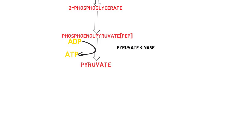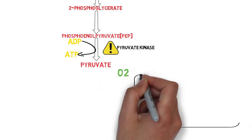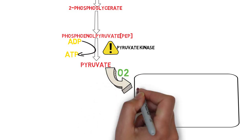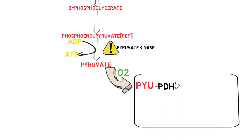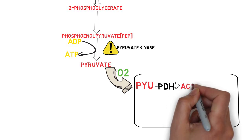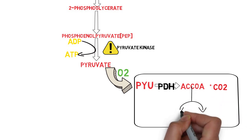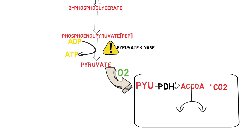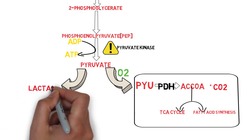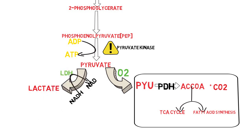At the end of the glycolytic pathway, we have the production of two molecules of pyruvate. The enzyme pyruvate kinase is an important enzyme — I will be discussing the pathophysiology of its deficiency. Now, this pyruvate can enter two pathways depending on the presence of oxygen. If oxygen is present and cells have mitochondria, pyruvate enters the mitochondria where it is acted on by pyruvate dehydrogenase, a very important enzyme, which converts pyruvate into acetyl coenzyme A and releases carbon dioxide. Acetyl-CoA then enters the TCA cycle or may be used for fatty acid production. In the absence of oxygen, pyruvate is converted into lactate via lactate dehydrogenase.